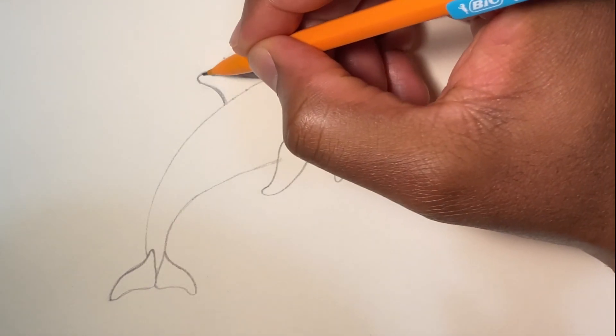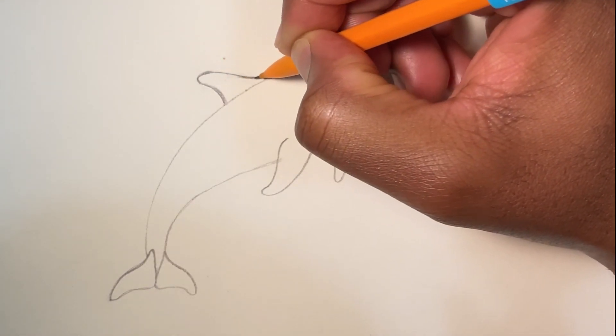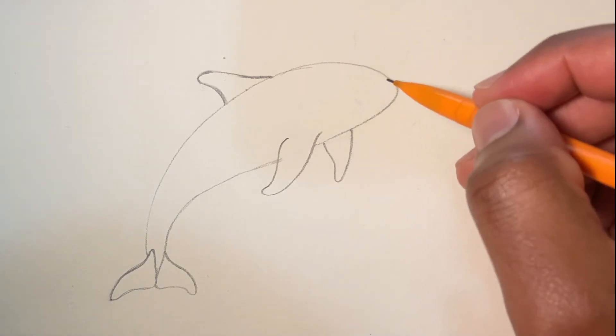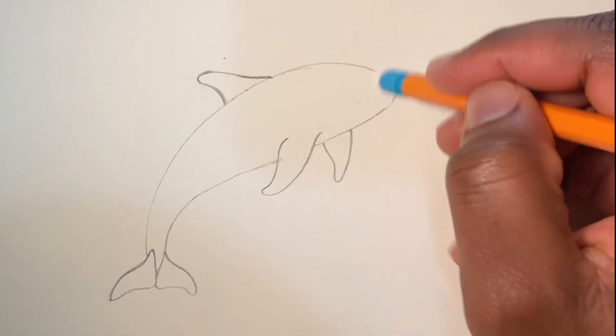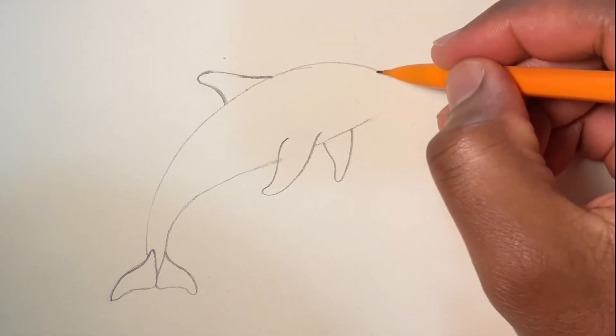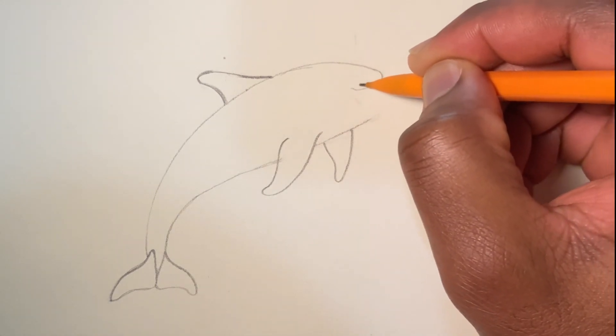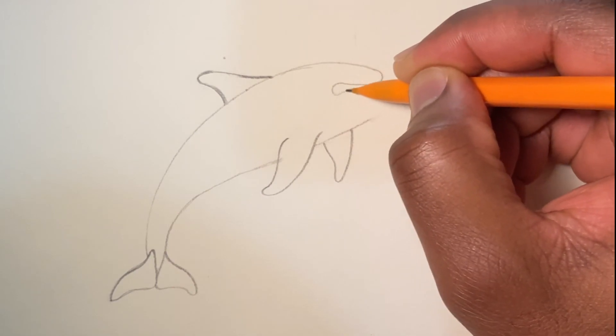And make this curve a little bit better. And then we're going to erase this part so we can place its nose, and then we're going to see it right there, its eyes.